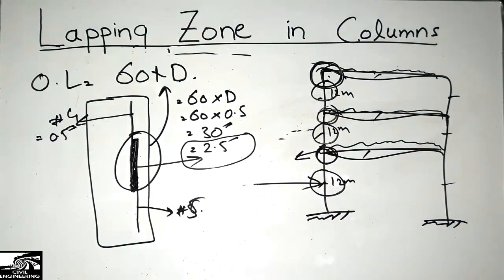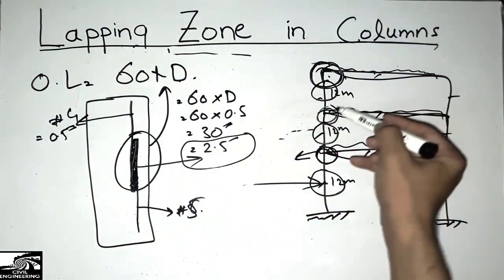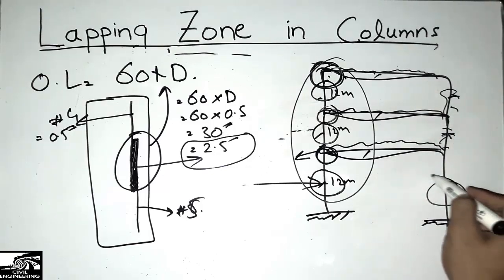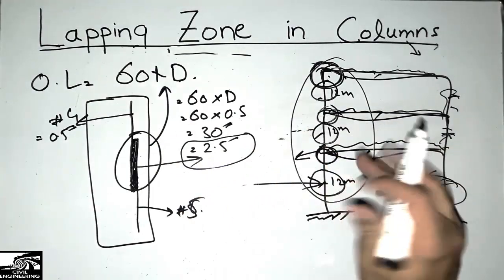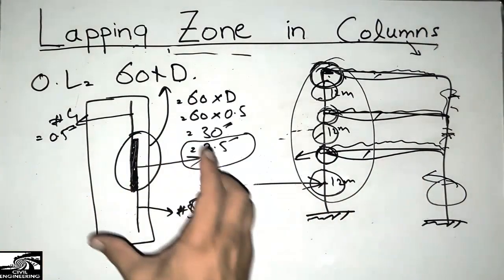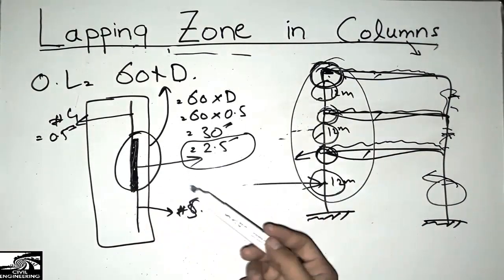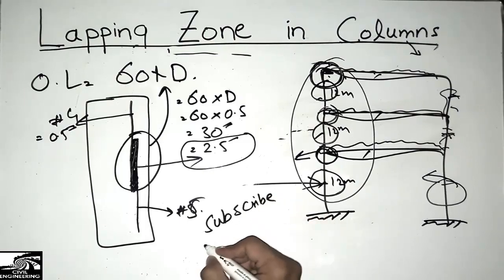This is done to increase the ductility of the column and to avoid the brittle behavior of the column. The column is a catastrophic member of the structure — it should be designed very carefully. When the column fails, your whole structure is going to collapse. So the lapping zone, the lapping length, and the joints are very important to determine the exact location of lapping in the column. Don't forget to subscribe to our channel for more civil engineering updates. Thank you.